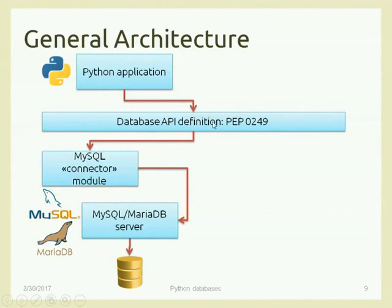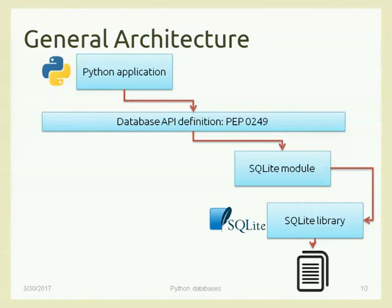The Python application and the module are together; the database server is separate, installed at the OS level. The same applies to SQLite — even though it's less visible, because the real SQLite library is written in C for efficiency. To access its functions, we need a small Python module that translates Python calls into the C functions of the SQLite library. So we import a different module in Python, but use the same high-level calls in both cases.